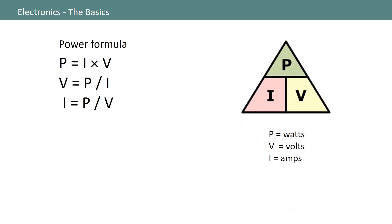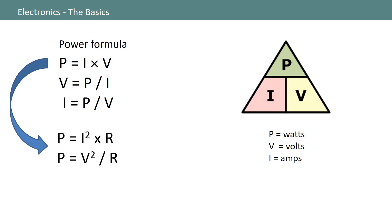Just as with Ohm's Law, we can come up with a visual mnemonic to remember the relationships between power, current, and voltage. If you can remember that power is equal to current times voltage, you can quickly come up with the other relationships just by doing a little bit of algebra, or just by referring to this visual mnemonic. Since we have terms in the power equation that are common to Ohm's Law, we can use these relationships to come up with a couple other equations for power as shown here.